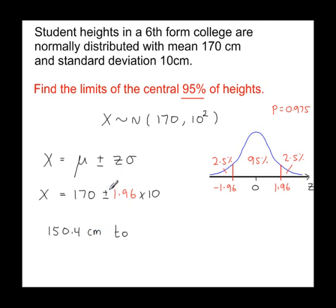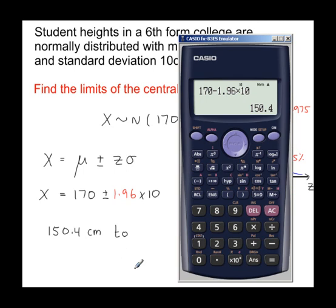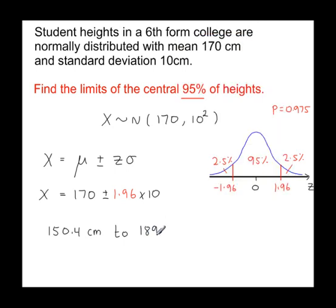And now we need the plus. So just replay the previous calculation, changing that minus to a plus. The rest stays the same. And that gives you 189.6, 189.6 centimeters.